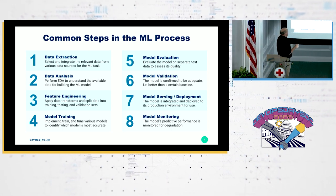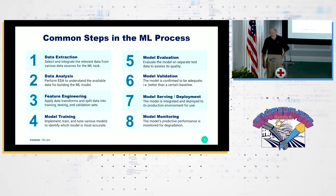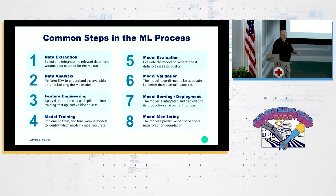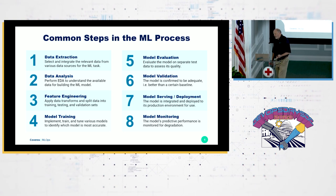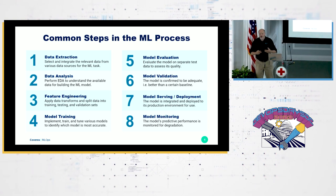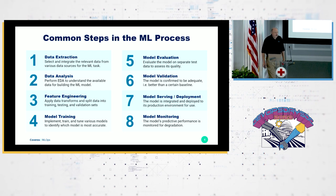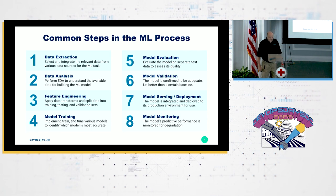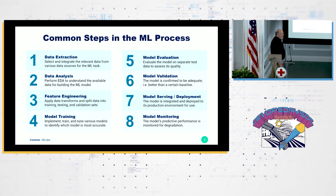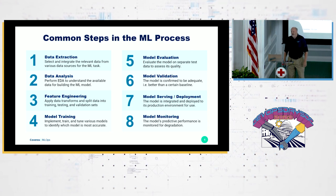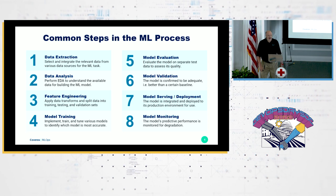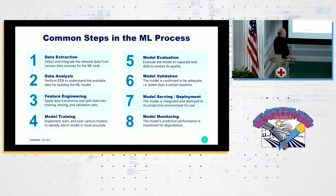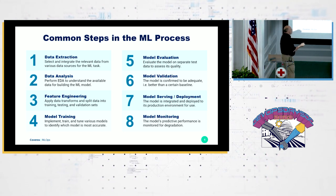After we have our data set up, we get into model training — some people call this experimentation. This is where we look at different machine learning models, different parameters for those models, and different hyperparameters, which control how fast we want to learn and how fast we want the model to reach accuracy. After training, we evaluate how well the model works by giving it data it hasn't seen before and seeing how well it predicts whatever our business case is.